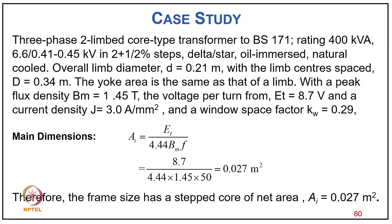Design case study: a 3-phase, two-limb, core-type transformer, BS171 rating 400 kVA, 6.6 kV / 0.414 kV (in ±2×1/2 steps), star-delta-star, oil-immersed natural cooling. Overall limb diameter d = 0.21 m, limb center spacing D = 0.34 m, yoke area same as limb area. Frequency density Bm = 1.45 T, volt per turn ET = 8.7 V, current density δ = 3.3 A/mm², window space factor Kw = 0.29.